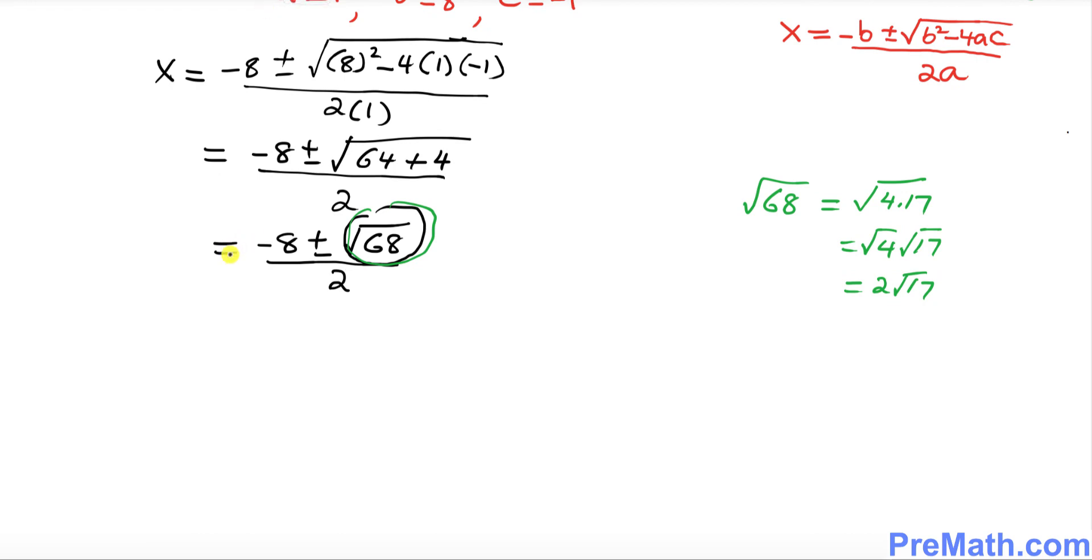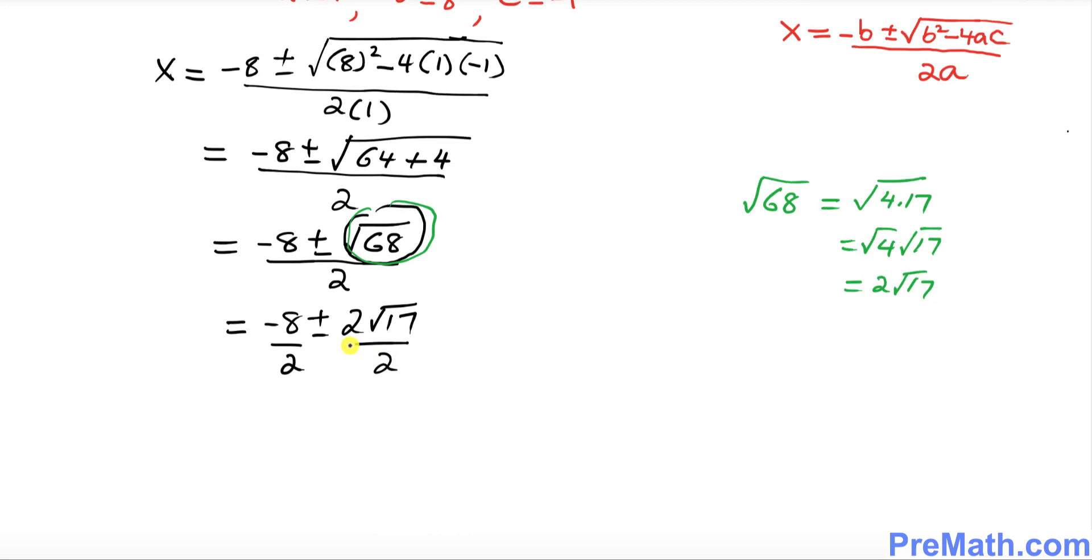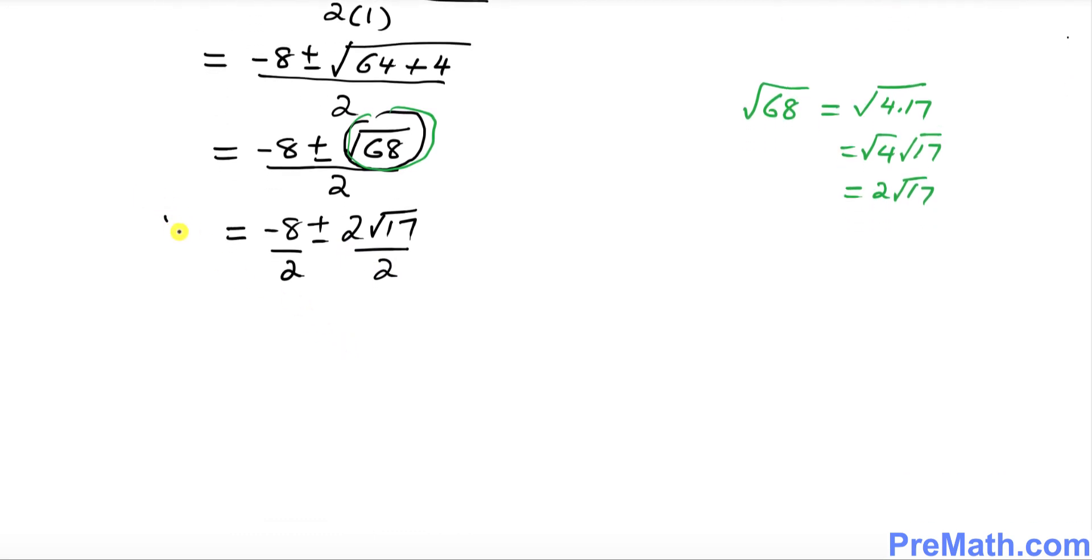So I'm going to write down -8 plus minus 2√17 divided by 2. Now see what happens over here.